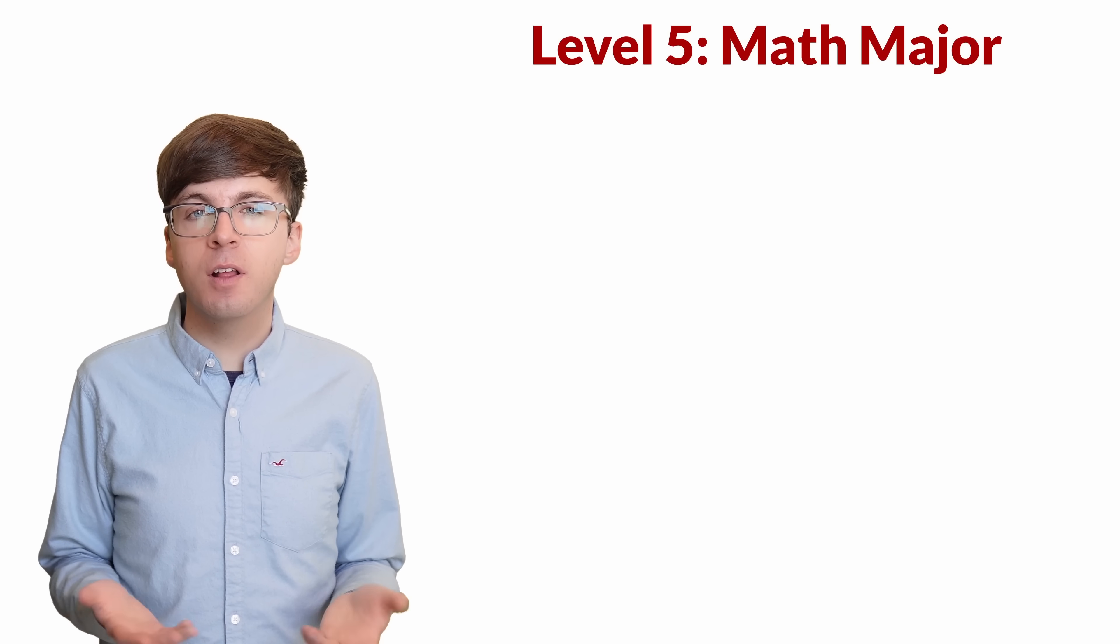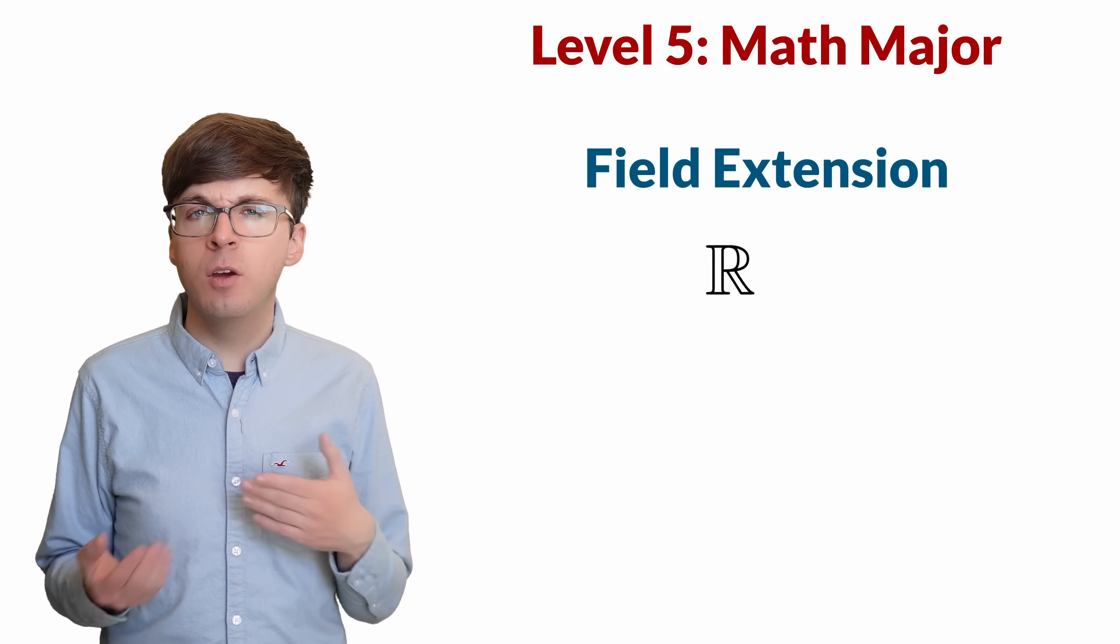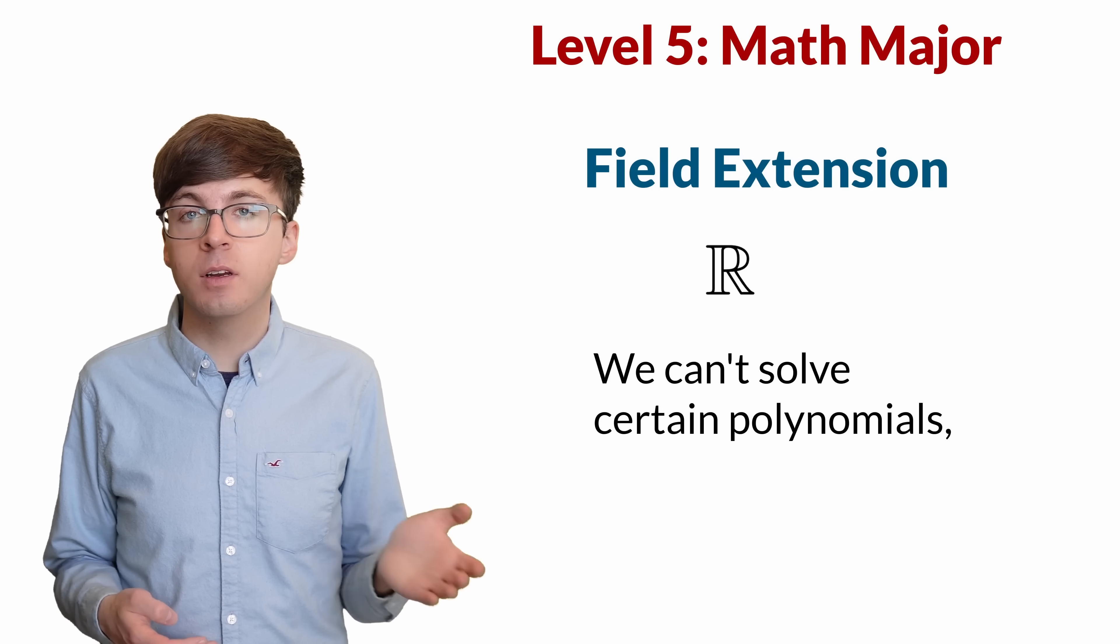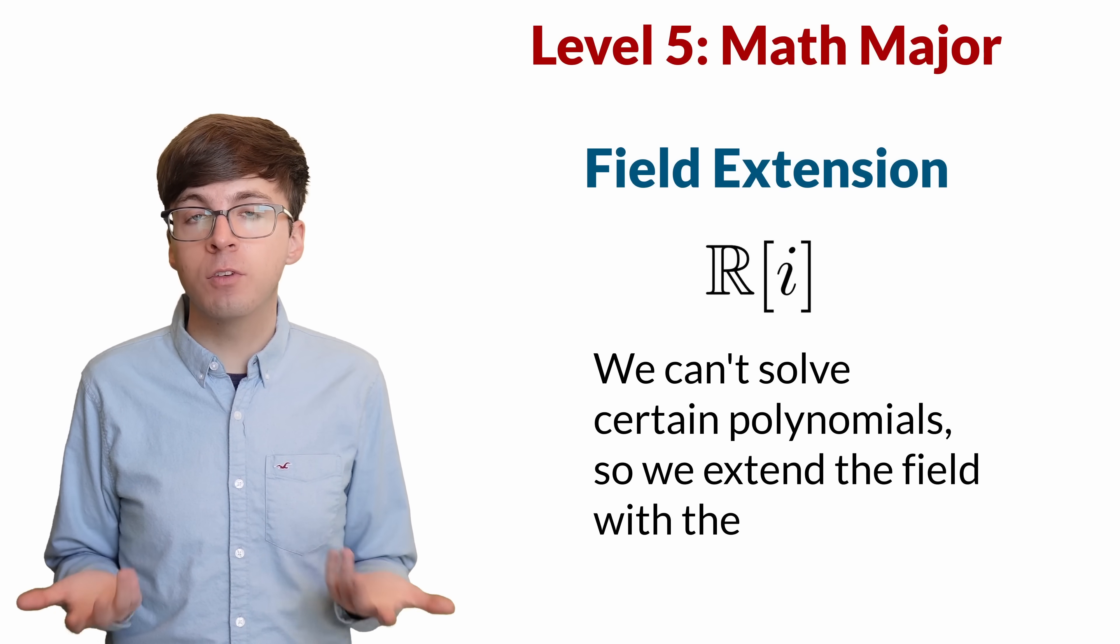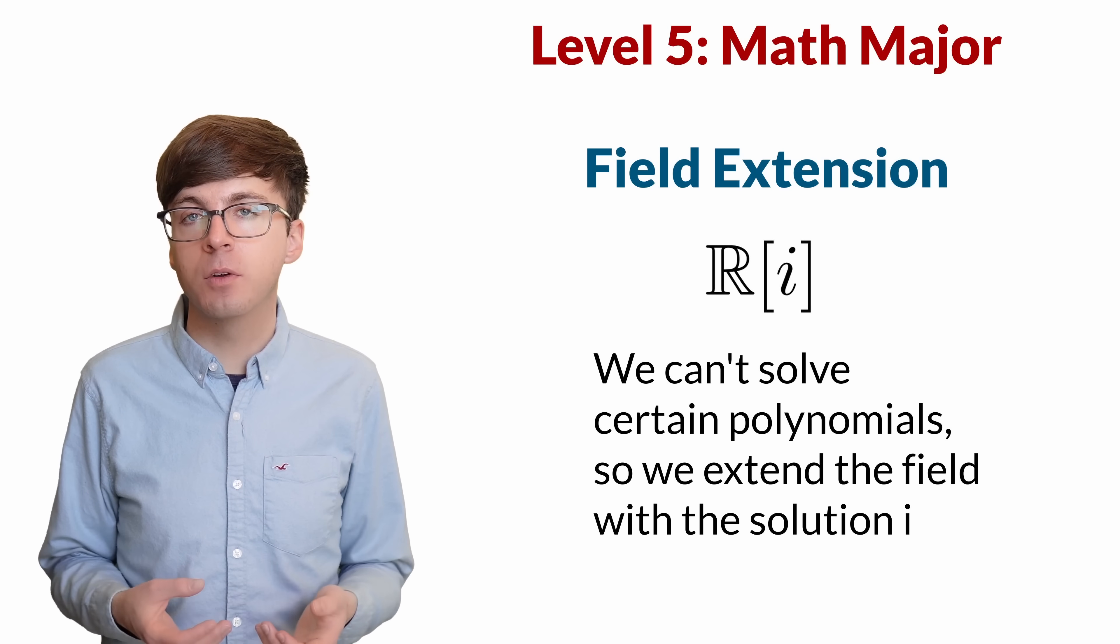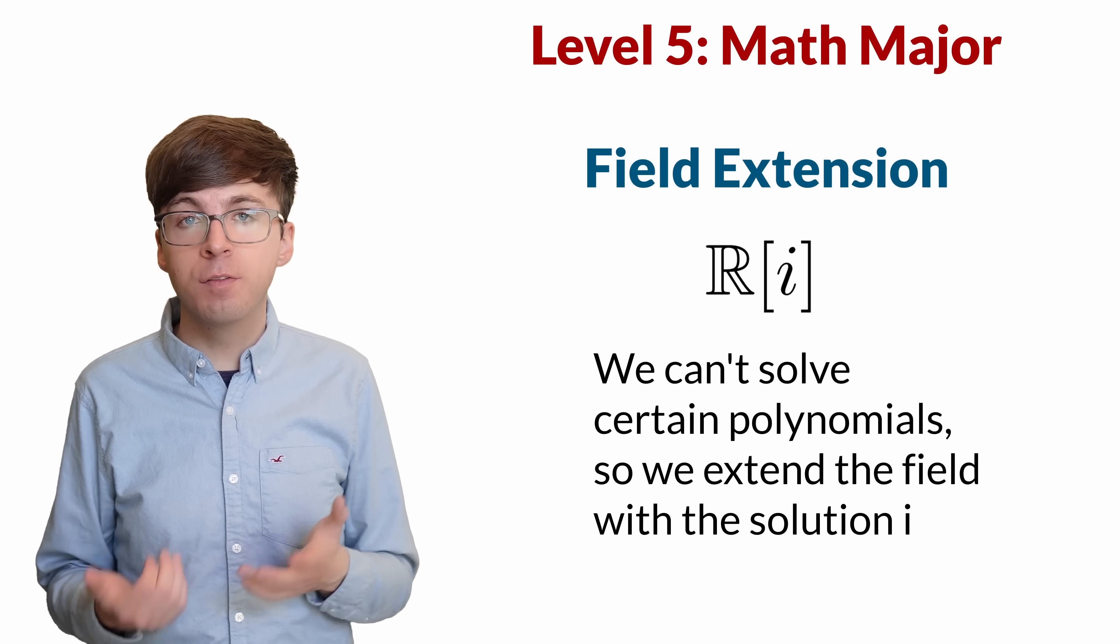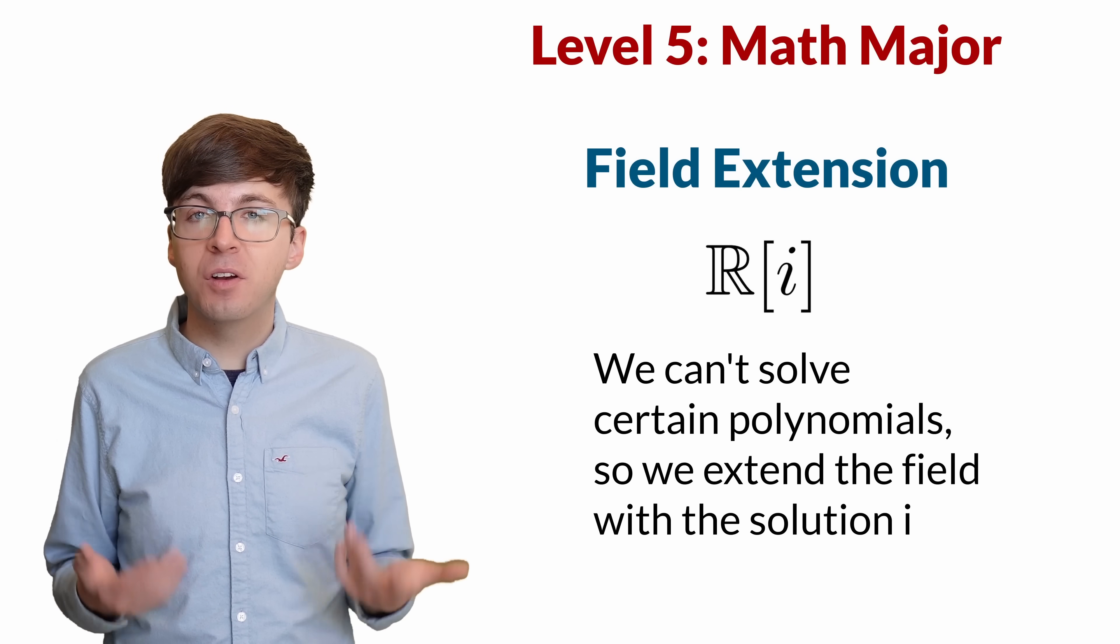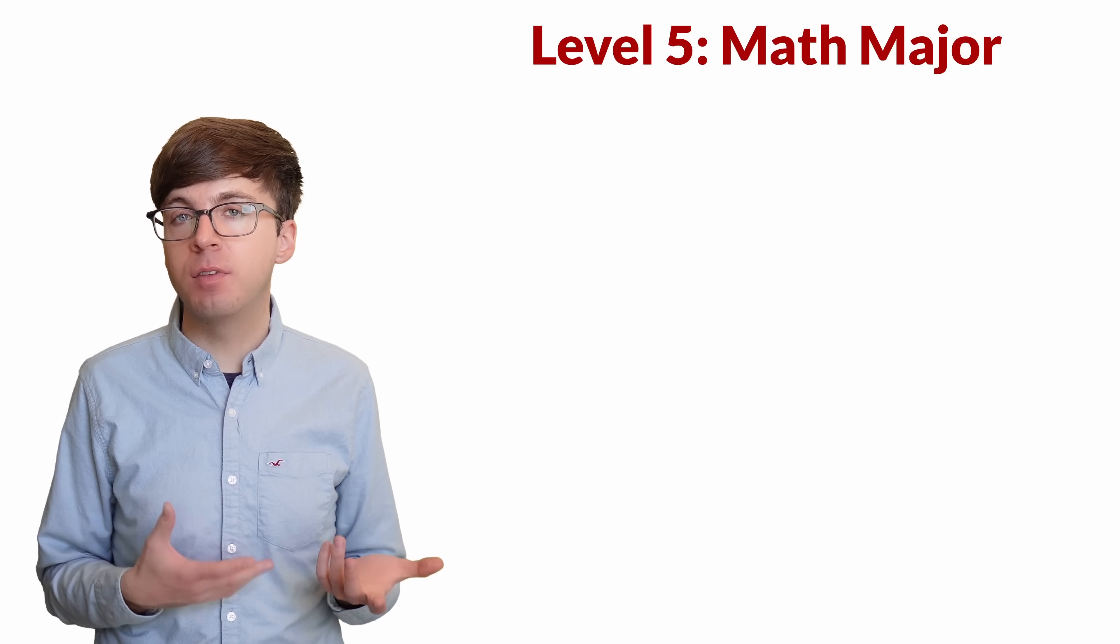In abstract algebra, this is called a field extension. We started with the field of real numbers. We noticed that we aren't able to solve certain real polynomial equations, like x squared equals negative 1. So we extended our field to include a solution of that equation. This led us to a larger field, which we call the complex numbers. If our new field were missing any roots of polynomials, we could do another field extension and add them in. But we don't have to, because the complex numbers are algebraically closed. These ideas also give us another way to define the complex numbers.